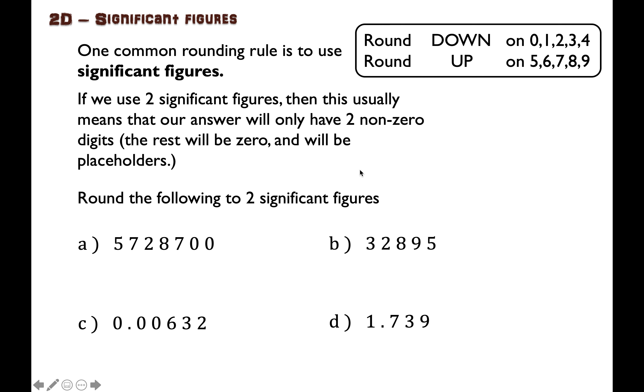One common rounding rule is to use significant figures. If we use two significant figures, then that usually means that our answer will only have two nonzero digits, and all the other digits will be zero and they'll just be there as placeholders.